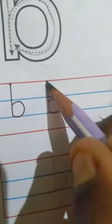How we will write in line. See kids. First to third line, we will make a standing line. And then one curl. Second to third line curl.